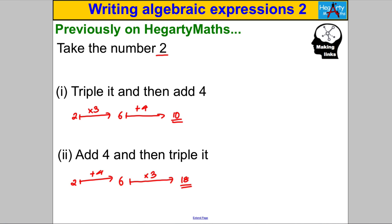And you get 18 — a different answer. It's pretty obvious because we know the way addition and multiplication works: if you do a multiply first and then add, it's going to be different from doing the add first and then the multiply. So it's really important — the order matters.